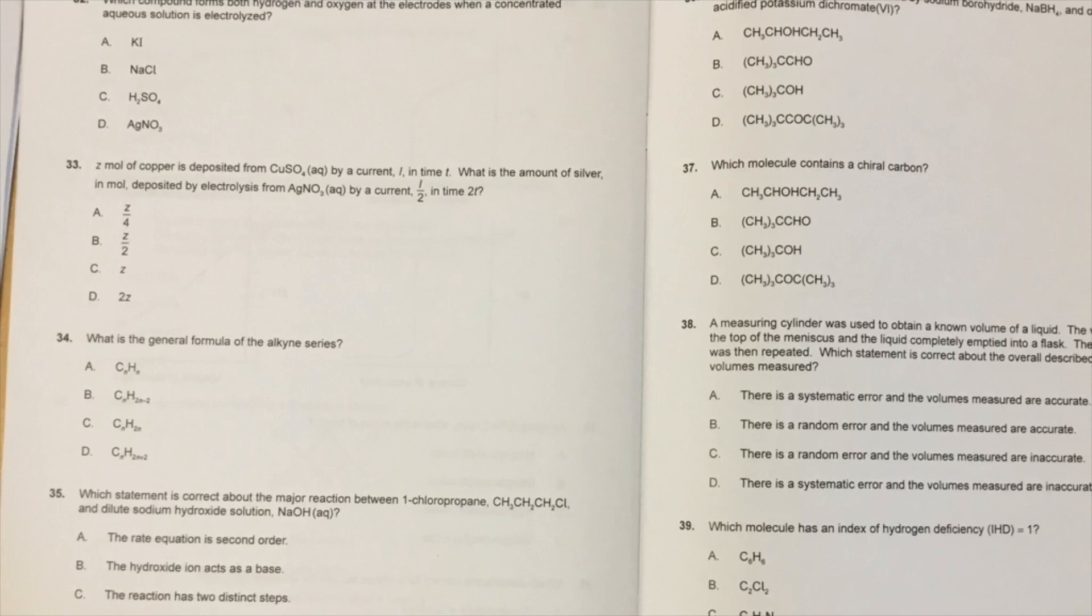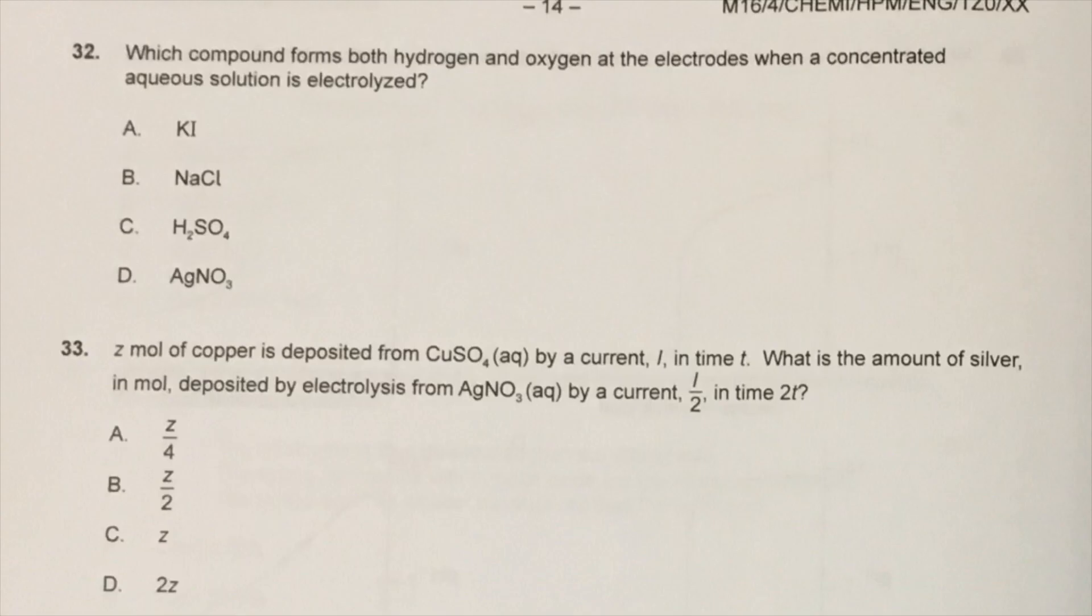Take for example this question 32: Which compound forms both hydrogen and oxygen at the electrodes when a concentrated aqueous solution is electrolyzed? The answer to this question is concentrated sulfuric acid. When this is electrolyzed, you get hydrogen and oxygen. When something like sodium chloride is electrolyzed and it's concentrated, then you would get chlorine at one electrode and hydrogen at the other. If it's dilute, then you would get hydrogen and oxygen. And if it's molten, then you would get both sodium and chlorine.